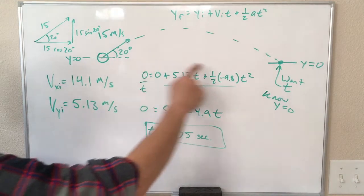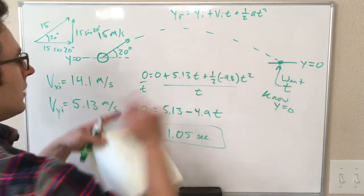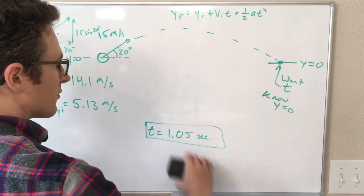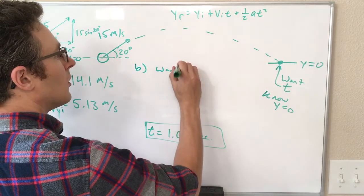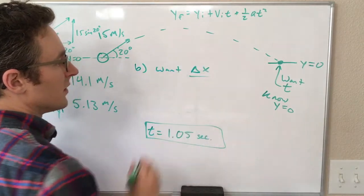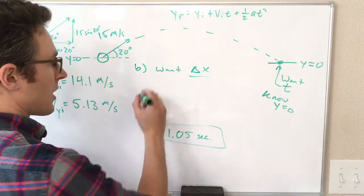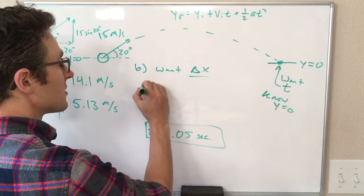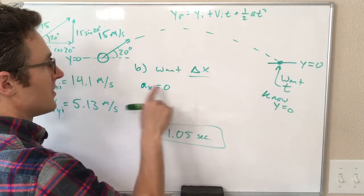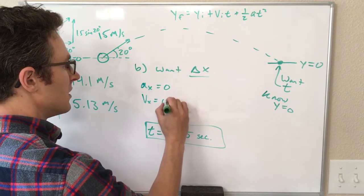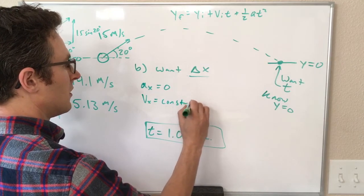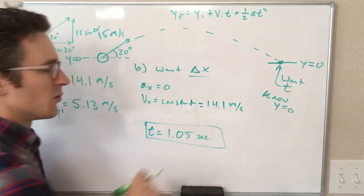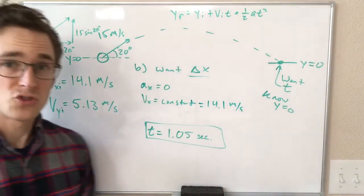For part B, we want to know how far it goes in that time. Or in other words, for part B, I'm going to leave the time up, but I'm going to erase this. So for part B, we want delta x. So things we know about the x-direction. We're not going to write down all the variables because there aren't that many because Ax equals zero, as it does often for these problems, which means Vx is a constant, and it equals 14.1 meters per second. So this velocity, this 14.1 meters per second, is not changing.